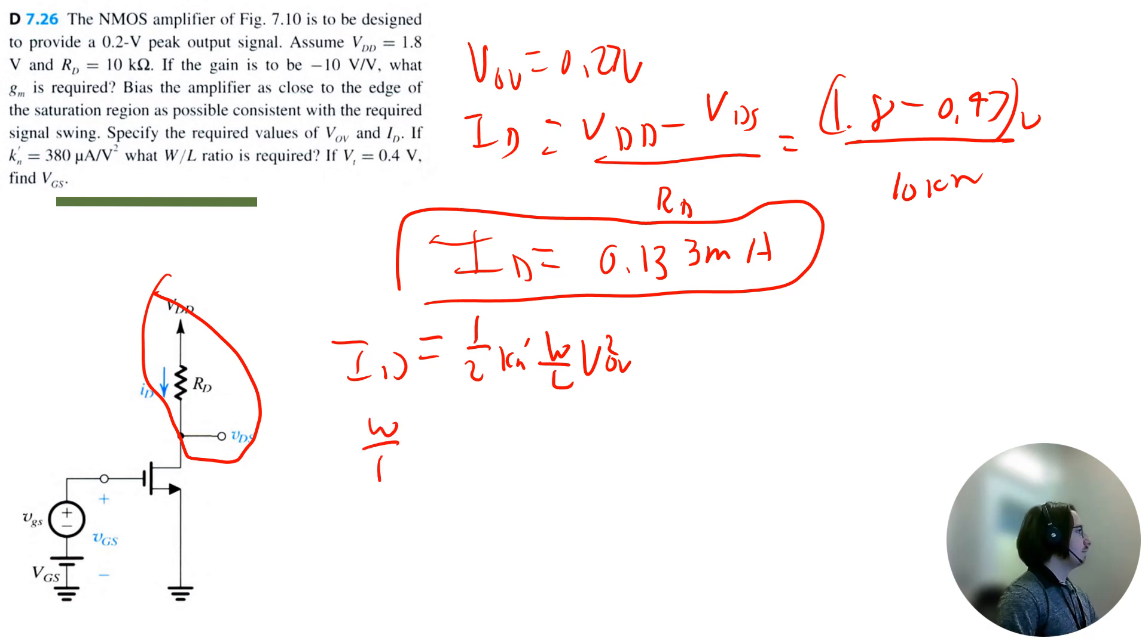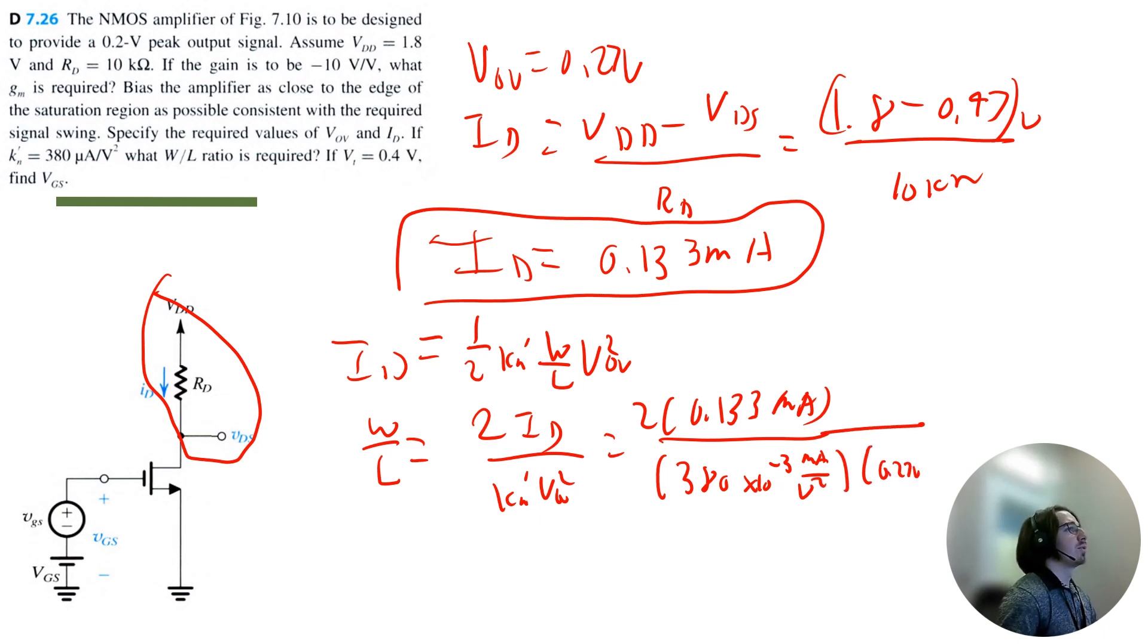So we're going to get W divided by L is equal to 2 ID divided by KN prime times V overdrive squared, which is equal to 2 times 0.133 milliamps divided by 380 microamps, that would be 10 to the negative 3, volt squared times V overdrive squared, which is 0.27 volts squared. So I get W divided by L, that ratio is equal to 9.6.